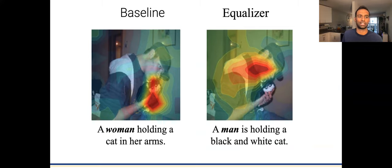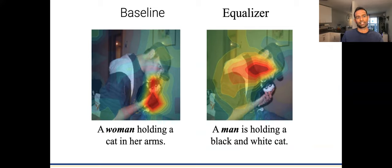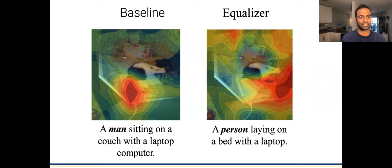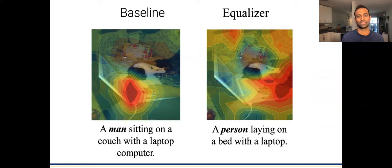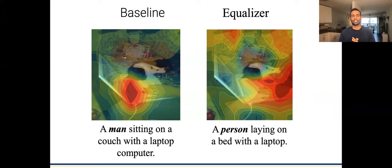For an image where there is no gender evidence, the baseline model predicted 'a man sitting on a couch with a laptop computer,' but the equalizer model now predicts 'a person laying on a bed with a laptop' — resolving to a generic word when gender evidence is absent. This is one way we can use insights from explanations to add additional losses to make models right for the right reasons.